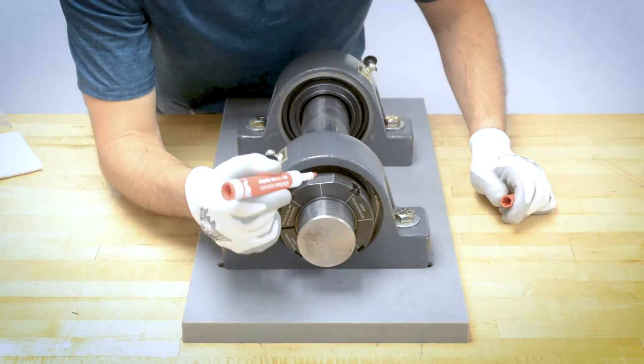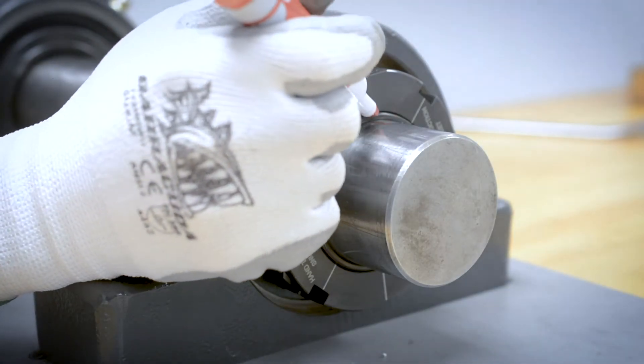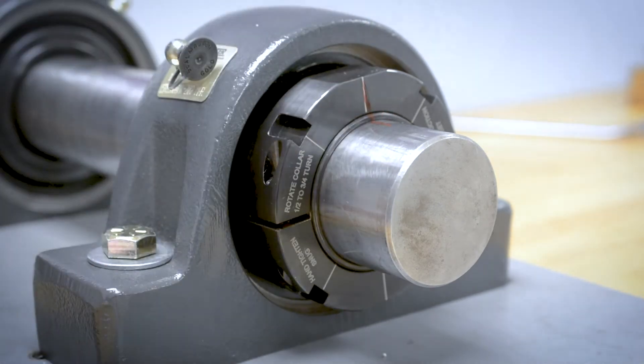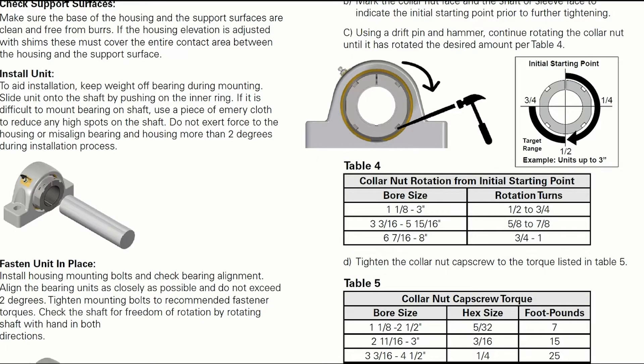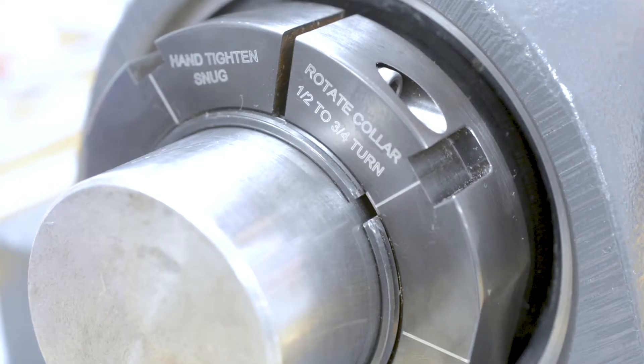Mark a line across the collar nut and shaft with a marker. Alternatively, note the location of one of the laser-etched tick marks on the collar in relation to the sleeve split. Refer to the installation guide for the rotation specification to achieve full lock, or simply read the note on the collar nut.